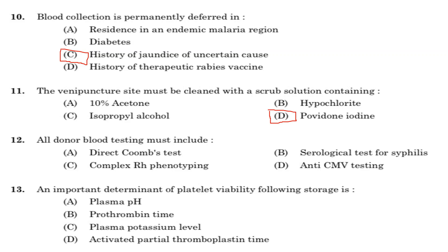Twelfth question: all donor blood testing must include. Option A: direct Coombs test. Option B: serological test for syphilis. Option C: complete RH phenotyping. Option D: anti-CMV testing. After blood has been donated, it is always tested for infections including hepatitis B, hepatitis C, HIV, AIDS, syphilis, malaria, etc.